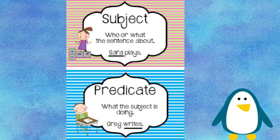A subject is who or what the sentence is about. For example, Sarah plays. Sarah is a proper noun. It is the first part of the sentence. It is the subject.